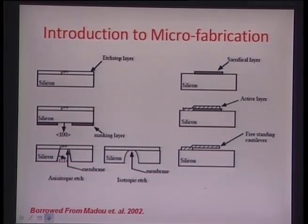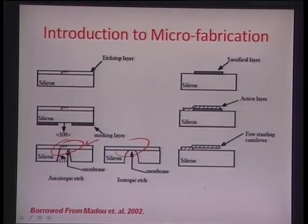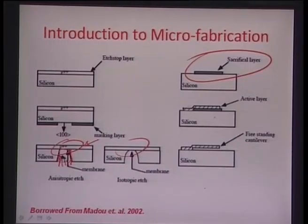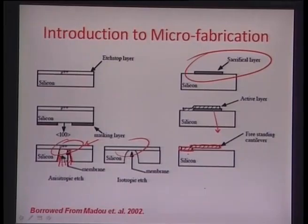This slide, borrowed from a textbook by Professor Mark Madou, shows how various processes can be integrated to realize things like diaphragms etched from the back side using an etch stop on P++ material. Similarly, to build a micro-cantilever, you build a sacrificial layer, deposit a high-strength active layer, and when you remove the sacrificial layer, you are left with a thin cantilever on the silicon surface. These schemes help in realizing structures useful for detection and sensing.